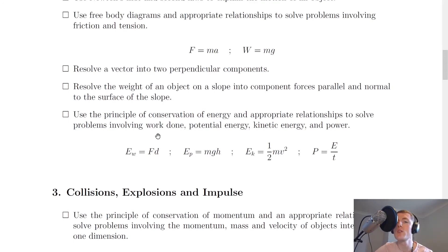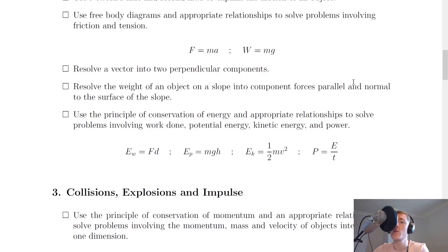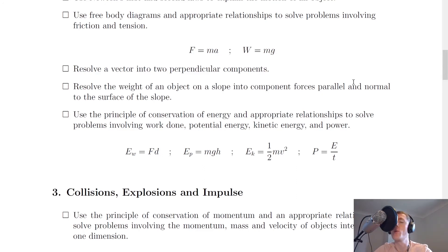You need to resolve a vector into two perpendicular components. For a force vector acting at an angle to the horizontal, the horizontal component is F times cosine of the angle — a useful memory aid is that cosine 'goes across' — and the vertical component is F times sine of the angle. You should also resolve the weight of an object on a slope into components: the component parallel to the slope is W equals mg sine theta, and the component normal (perpendicular) to the slope is W equals mg cosine theta.